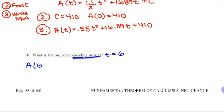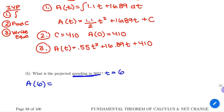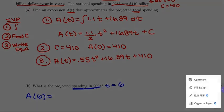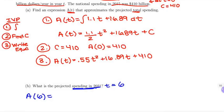And the next step, they say, well, what happens when you plug into it? So we're doing A of 6. We're plugging into what we just found up here. And so we're doing 0.55 times 6 squared plus 16.89 times 6 plus 410. I'm plugging into the equation I found. And what I get is 531.14.